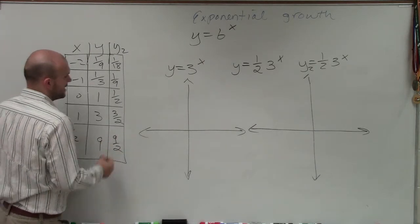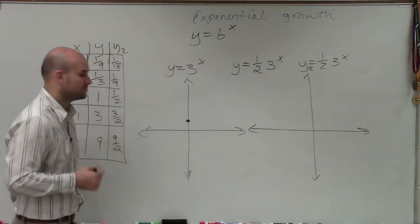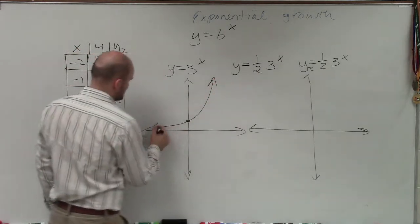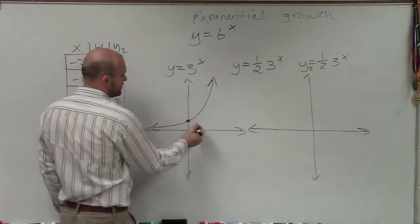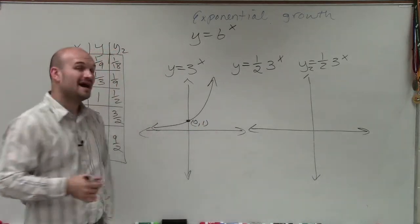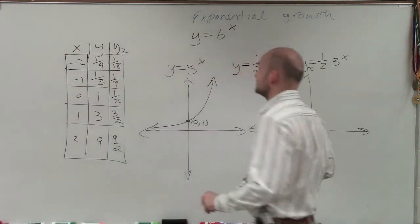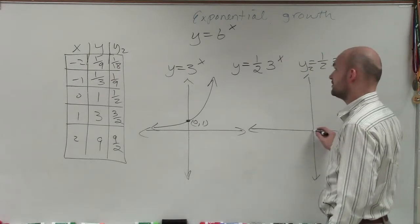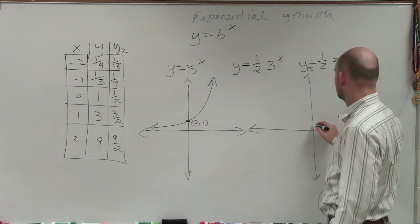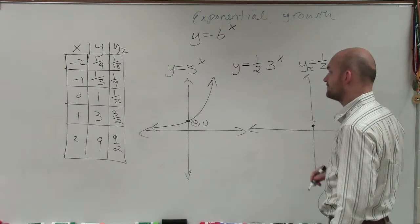So we know that our exponential function without any transformation is going to cross at 0 comma 1. But now, what you can see is that when x equals 0, my y-value now crosses at one half.